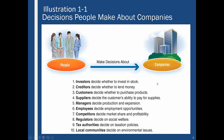Here are the people making decisions about a company. Investors decide whether to invest in the company's stock. Creditors decide whether to lend money. Customers decide whether to purchase a product — like, do you really want to buy a Kenmore washer if Sears is going out of business? Suppliers decide whether to extend credit. Managers decide whether to produce more, expand, or contract. Employees consider the health of the company. Competitors decide whether to enter the same market. Regulators consider the company's social welfare.